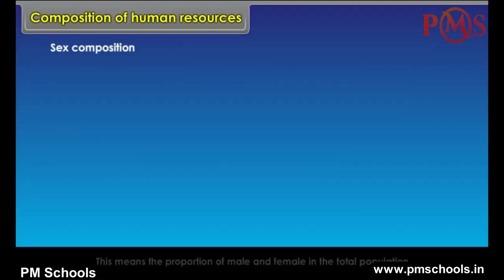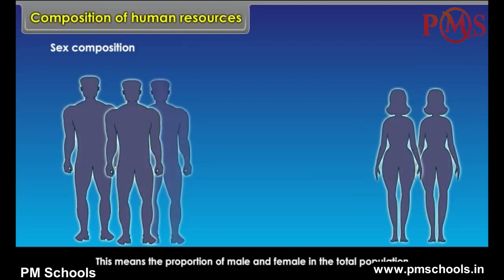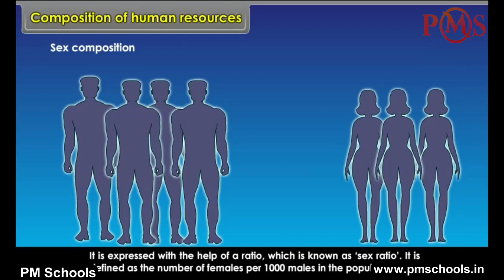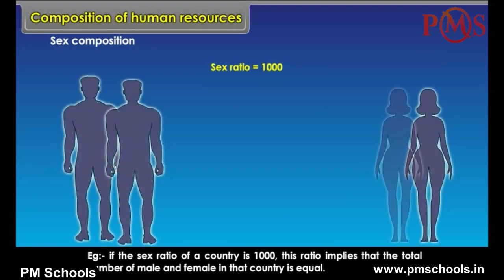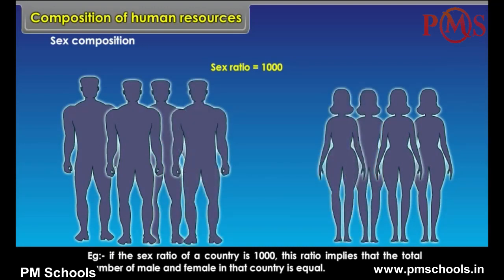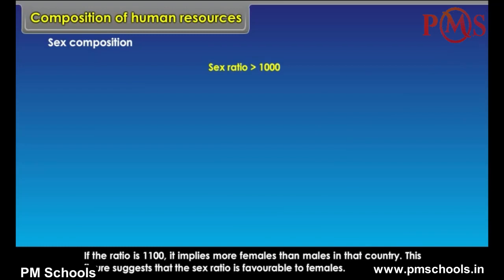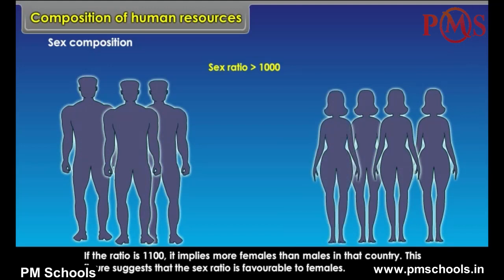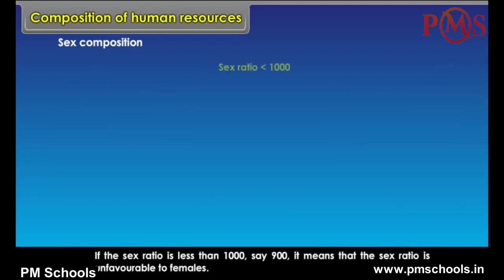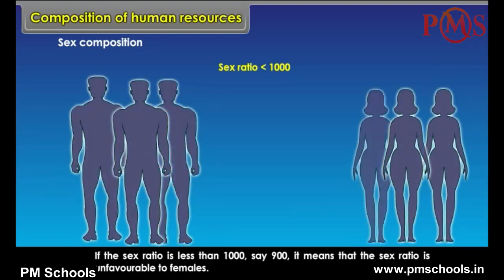Sex Composition means the proportion of male and female in the total population. It is expressed with the help of a ratio known as the sex ratio, defined as the number of females per thousand males in the population. If the sex ratio is 1000, male and female numbers are equal. If the ratio is 1100, it implies more females than males, which is favourable to females. If the sex ratio is less than 1000, say 900, it is unfavourable to females.